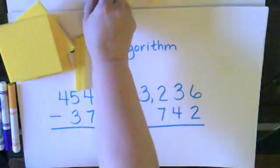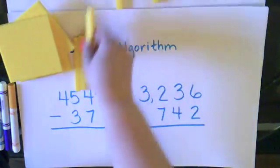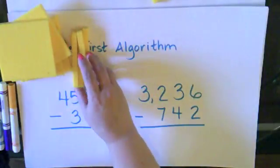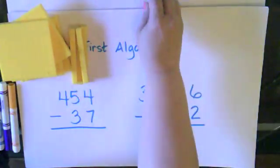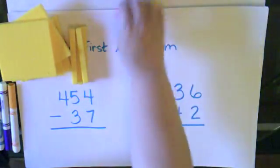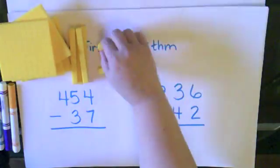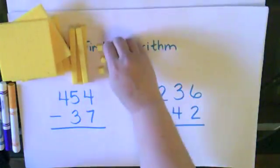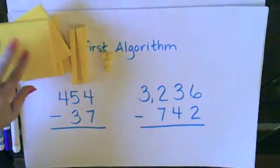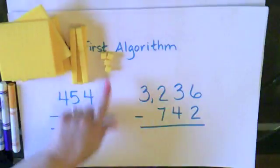10, 20, 30, 40, 50. And then I need 4 1s. 1, 2, 3, 4. So all together I have 454.